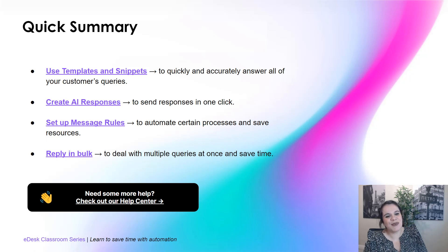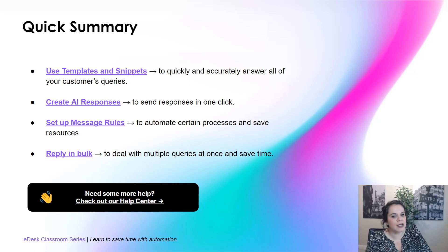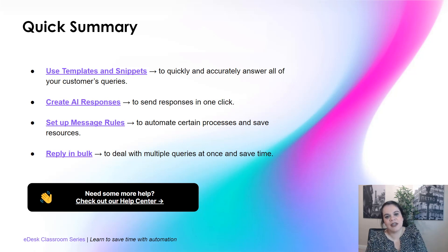And that's the end for today. Quick summary of best practices to save time: use templates and snippets to quickly and accurately answer all customer queries, whether you're in the office or not. Create AI responses to send responses in one click. Set up message rules to automate processes and save time and resources — I highly recommend using message rules as much as you can. Reply in bulk to deal with multiple queries at once. I hope you enjoyed today's video. Thank you so much for watching. I've left a link to the help center if you have questions. See you next time.